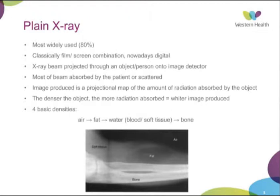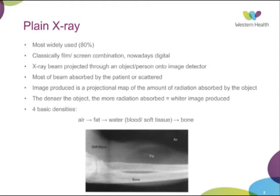Starting off with plain x-ray. This is the most widely used imaging modality in orthopaedics and also generally across the medical field, making up 80% of all imaging modalities used. Classically we used the film-screen combination, but nowadays we've gone digital. The x-ray beam is projected through the patient onto an image detector. Most of the beam is absorbed by the patient, some is scattered, and only a small amount ends up being detected. The image produces a projectional map of the amount of radiation absorbed, depending on the density of the structures.